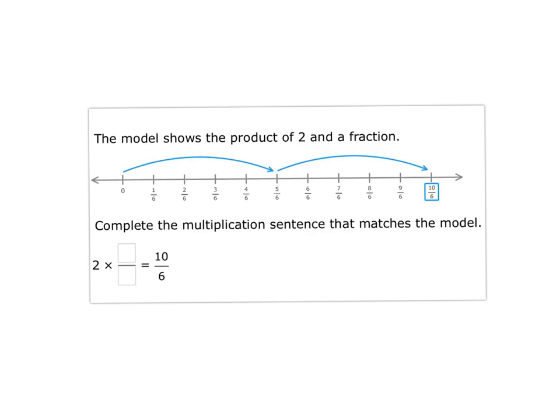This time they're giving you the whole number and the product, the answer. They want to know what fraction you're multiplying by. Well remember, the denominator is going to stay the same. And the numerator is whole number times the numerator equals 10. So you need to know 2 times what is 10. And we know 2 times 5 is 10. So the fraction is 5/6.